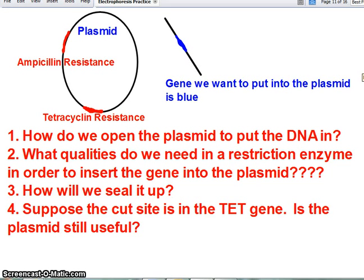Okay, so this is the second part of the review that we did in class for your test on genetic engineering as well as genetic control or regulation. So the first question here, how do we open the plasmid? Well, obviously, we've gone over this a few times. You open a plasmid using a restriction enzyme.